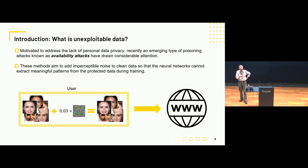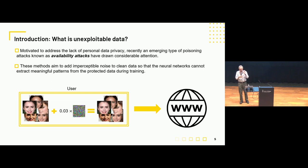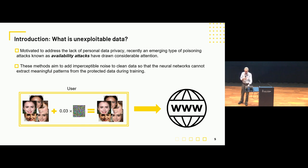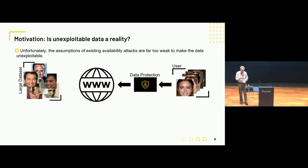This is the concept of unexploitable data. It's been a topic of recent interest — whether it's possible to add some sort of poisoning attack to the data you put online. If you have your image, can you add some sort of relatively imperceptible perturbation to create an availability attack, so that if someone tries to use your image their training algorithm won't be able to make use of it — your face won't be recognized by the face recognition model they train.